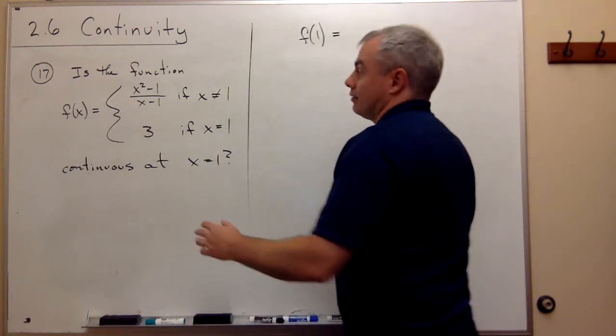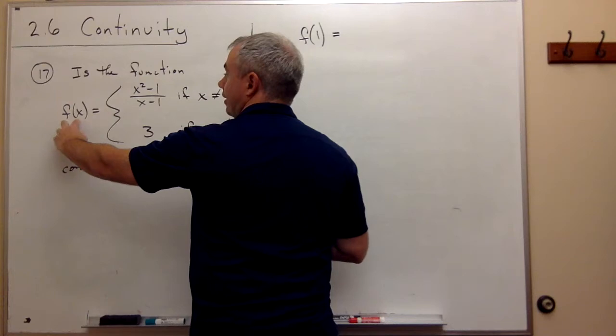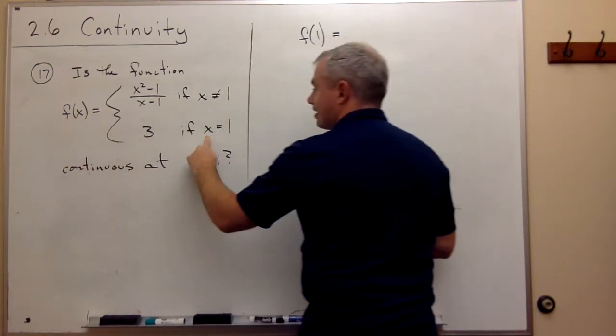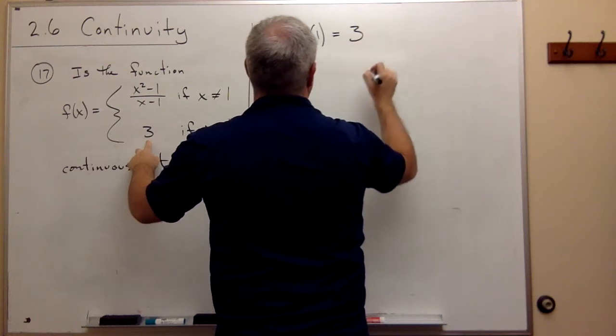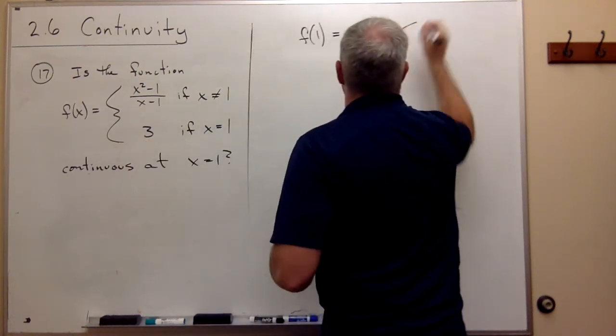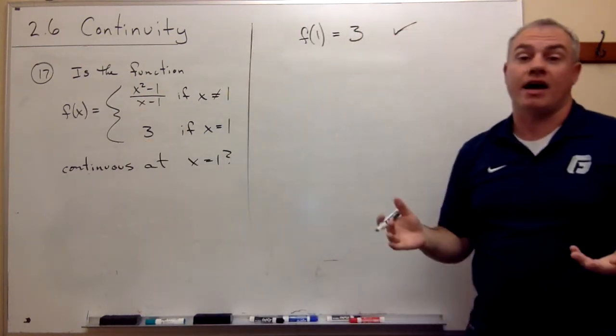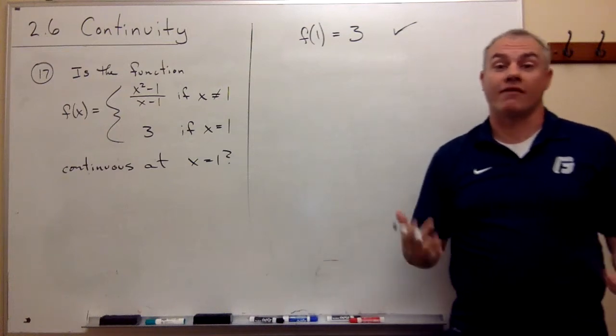Well, let's look. If we plug in 1 to this function, it says if x is 1, we get 3. So, f of 1 is 3, and we're done with that piece. I'll just put a check mark. Yeah, f of 1 is 3. We have a functional value.